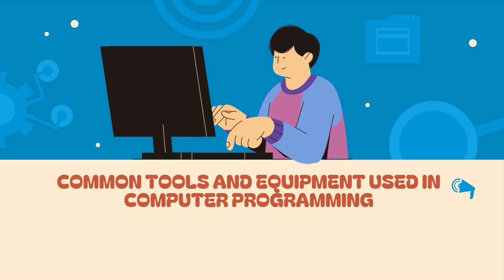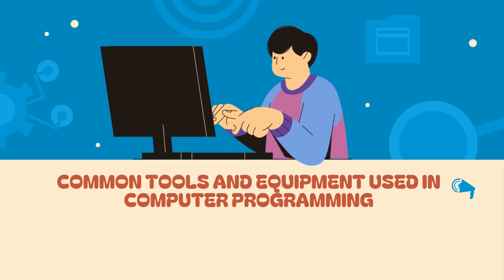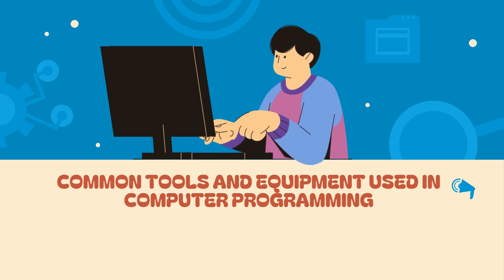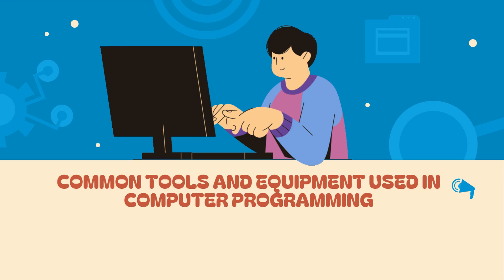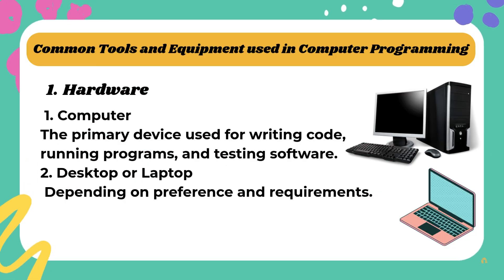Common tools and equipment used in computer programming. Hardware: The primary device used for writing code, running programs, and testing software is a desktop or laptop, depending on preference and requirements.